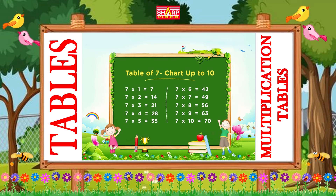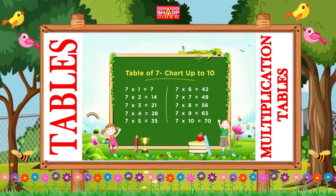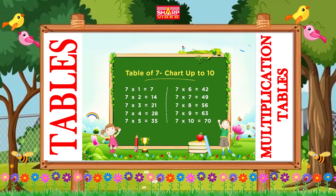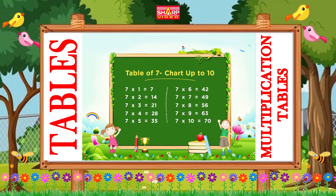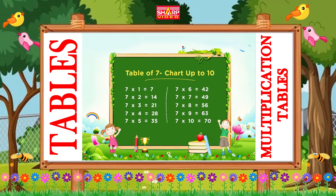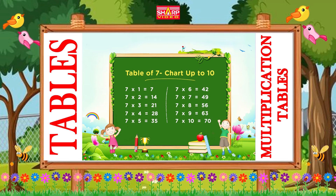Table of seven. Seven ones are seven, seven twos are fourteen, seven threes are twenty-one.